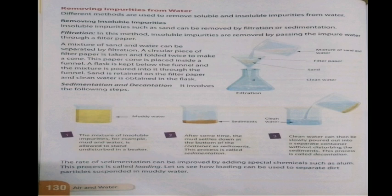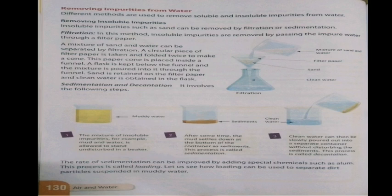A circular piece of filter paper is folded twice to make a cone, placed inside a funnel, with a flask kept below. The mixture is poured into the funnel — sand is retained on the filter paper and clean water is collected in the flask. This is the filtration process.